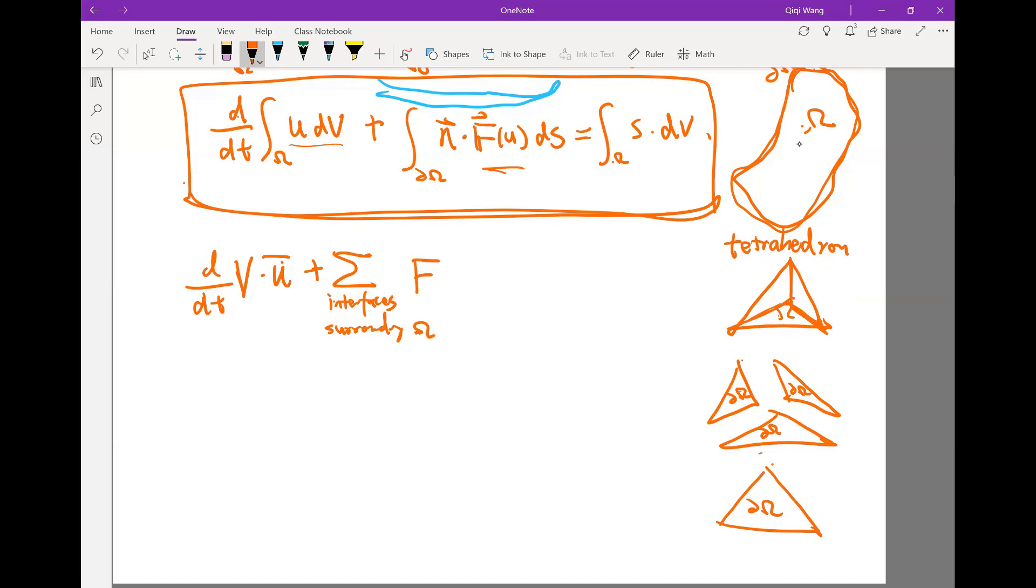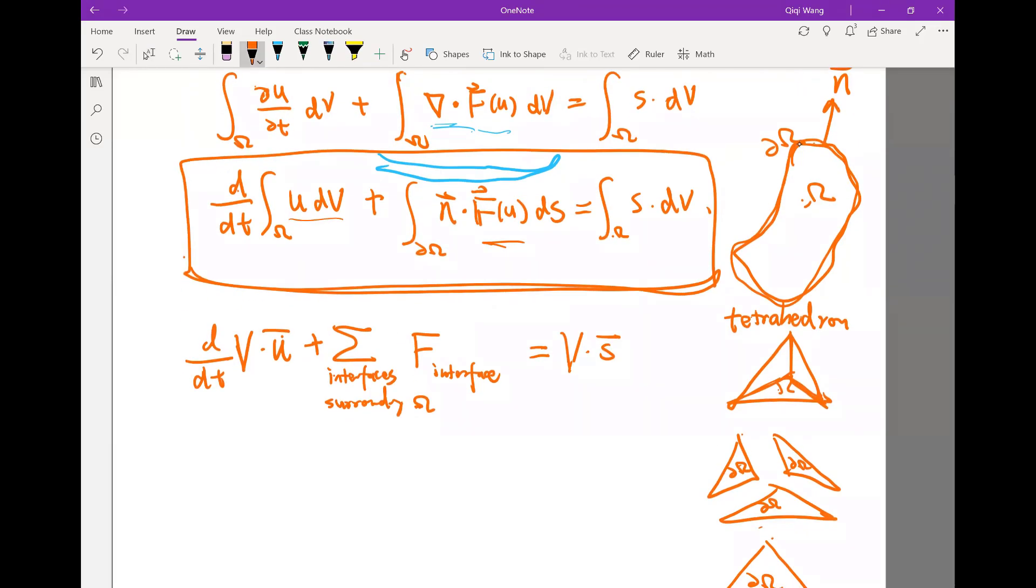And the F on the interface is actually the thing I have to approximate in finite volume. That is again equal to V times S bar, the average amount of source in this volume. This is something I can probably just approximate—the S bar is usually just approximated as the source function S evaluated on the u bar, on the average. So essentially, the most difficult part is to approximate this. I put a hat because that's usually the hat means the numerical or approximate flux.